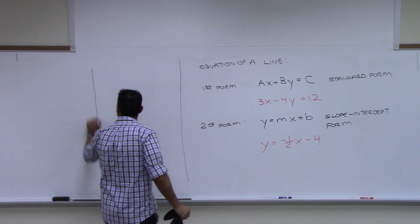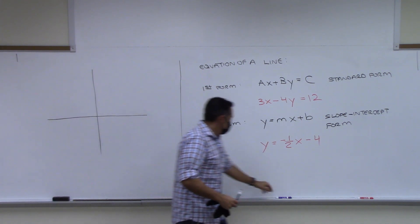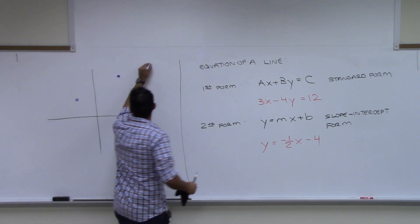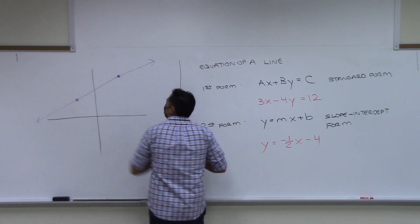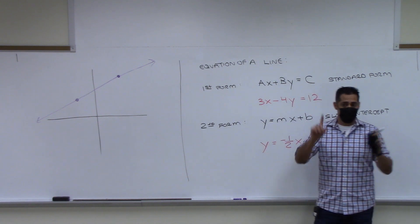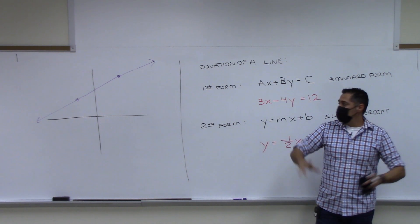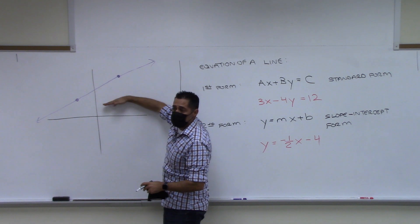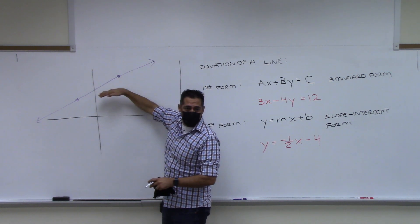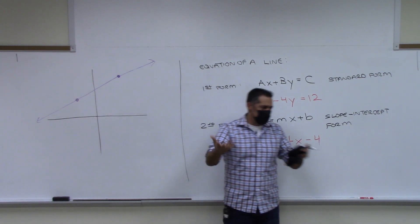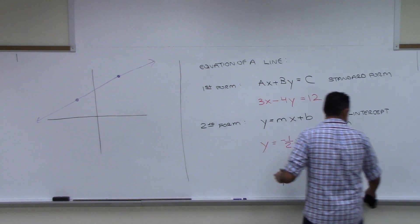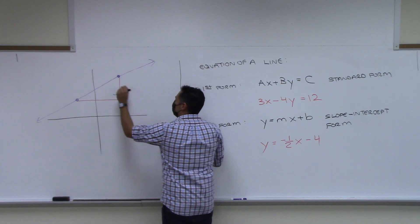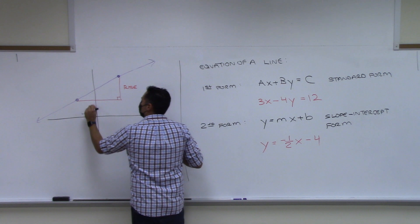When we look at the graph of a line, you need two points to define a line. If you take any two points and calculate the distance you move up, we call that the rise. The distance you go from left to right is called the run. We like to draw a little right triangle — this part we call the rise, and this part we call the run.